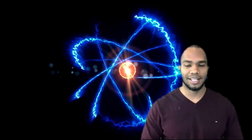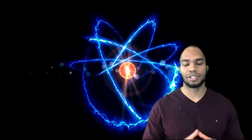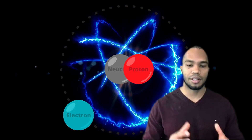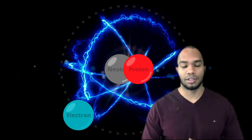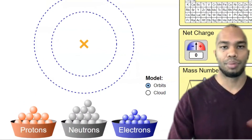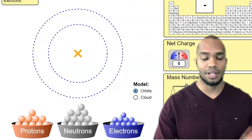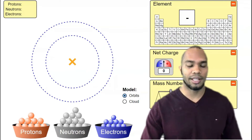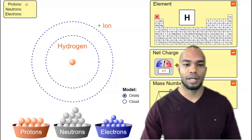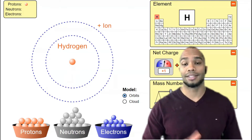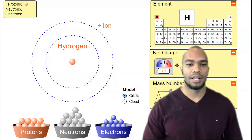In our previous lesson, we learned that the atom is comprised of three particles: protons, neutrons, and electrons. We have our bucket of subatomic particles, and we're going to take our proton and put it in the center of the atom, known as the nucleus.